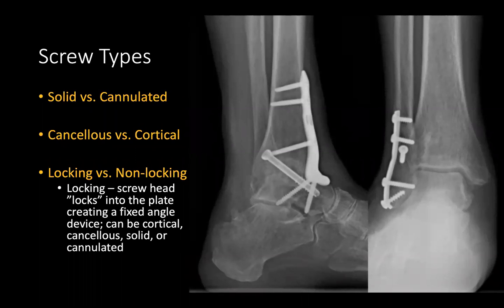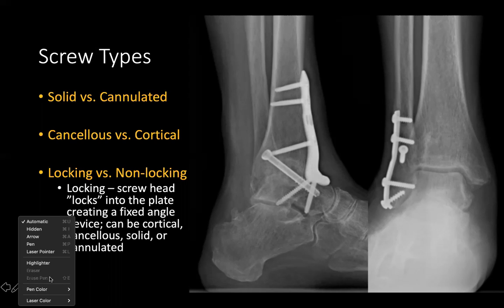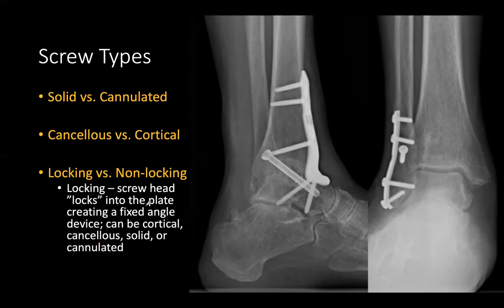The first category is solid versus cannulated — a cannulated screw has a hollow center for a guide wire; a solid screw is more robust with no hollow portion. The second category is cancellous versus cortical — cancellous screws have wider thread pitch; cortical screws have narrower thread pitches.